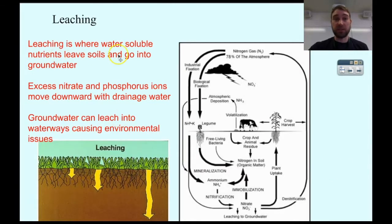So let's first talk about leaching. Leaching is where water-soluble nutrients leave soils and go into groundwater. Once they go into groundwater, that groundwater flows towards rivers, streams, lakes, and so on, and that groundwater contains the nutrients that weren't held by the soil.